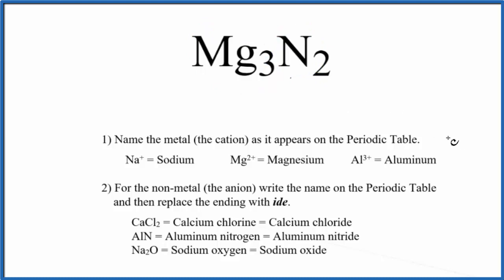So we have our binary ionic compound, we can use these rules to write the name. We'll first write the name of the metal as it appears on the periodic table. So this is our metal here, we're just going to write magnesium.